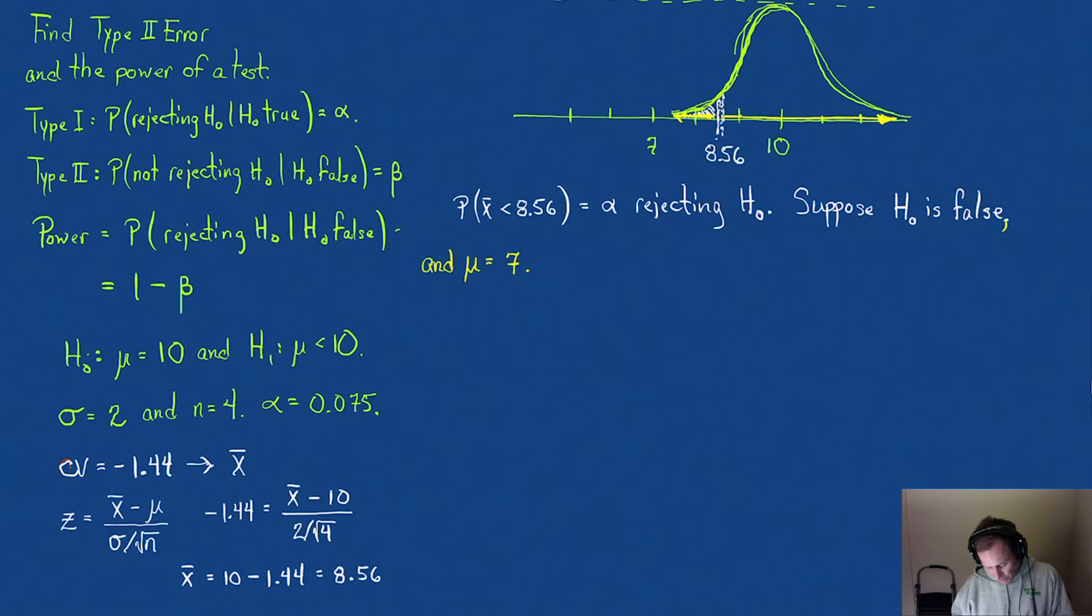Let's sketch that onto this picture as well. If mu is 7 and everything else being equal, we're going to have a picture with the same distribution, but it's going to overlap.